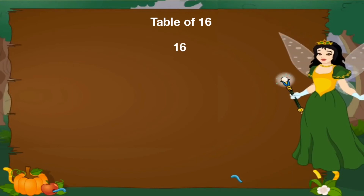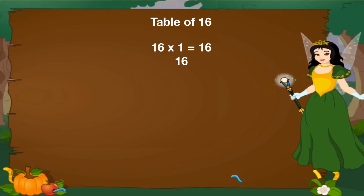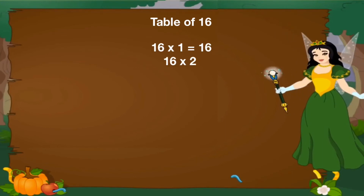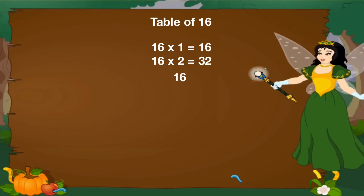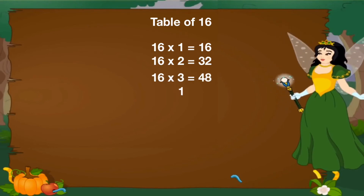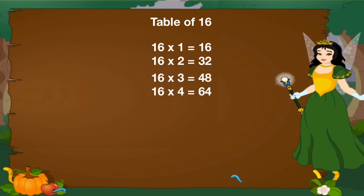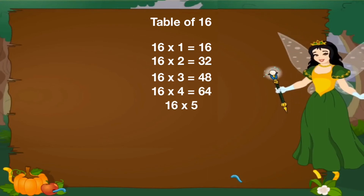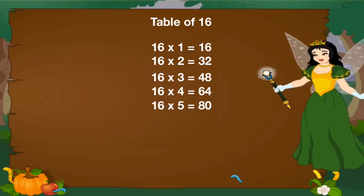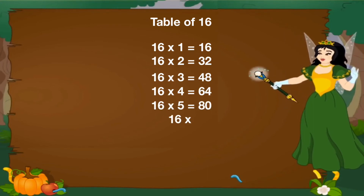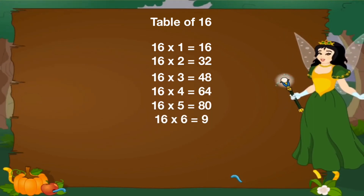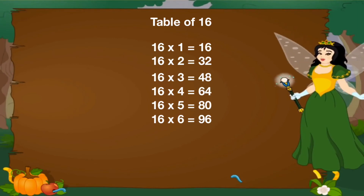16 ones are 16, 16 twos are 32, 16 threes are 48, 16 fours are 64, 16 fives are 80, 16 sixes are 96.